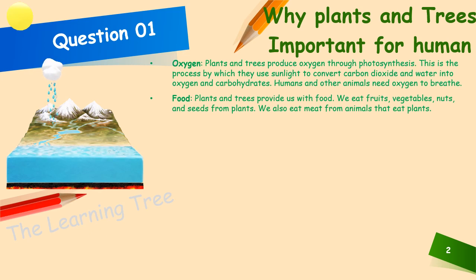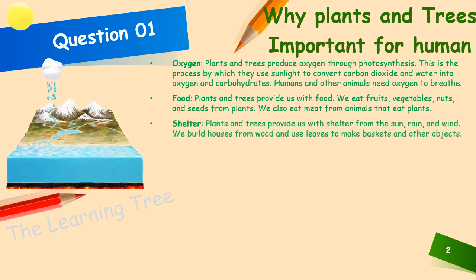Food: plants and trees provide us with food. We eat fruits, vegetables, nuts and seeds from plants. We also eat meat from animals that eat plants.